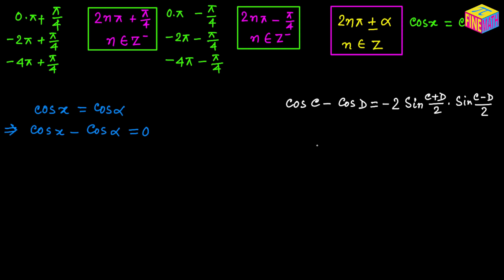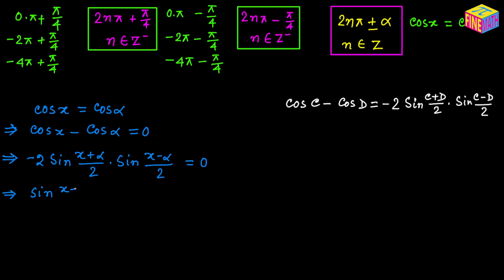So we can write our original equation as negative 2 times sine of (x plus alpha) over 2, times sine of (x minus alpha) over 2, all equal to 0. Dividing both sides by negative 2, we are left with two factors: sine of (x plus alpha) over 2, times sine of (x minus alpha) over 2 equals 0. From here we get two solutions.